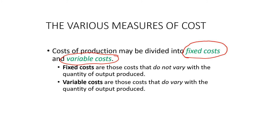Fixed costs are those costs that do not vary with the quantity of output produced. For example, if we are producing 10 laptops and want to produce 20, it does not affect the rent of the factory or the land. Variable cost, on the other hand, varies with output — producing more laptops requires more electricity, plastic materials, screens, and labor.